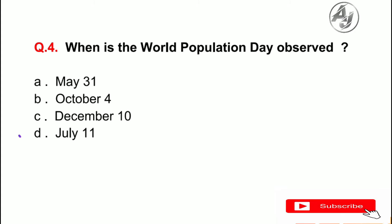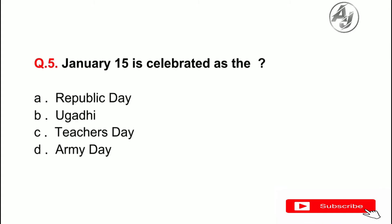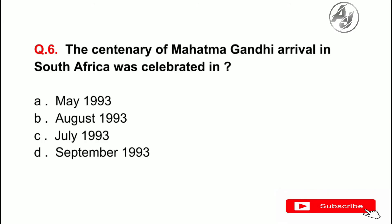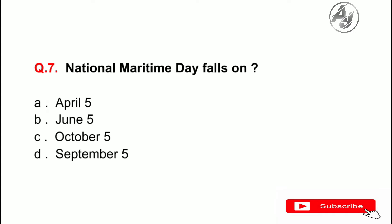Question number 4: When is the World Population Day observed? The answer is D — July 11. Question number 5: January 15 is celebrated as the — the answer is D — Army Day. Question number 6: The centenary of Mahatma Gandhi's arrival in South Africa was celebrated in — the answer is A — May 1993.